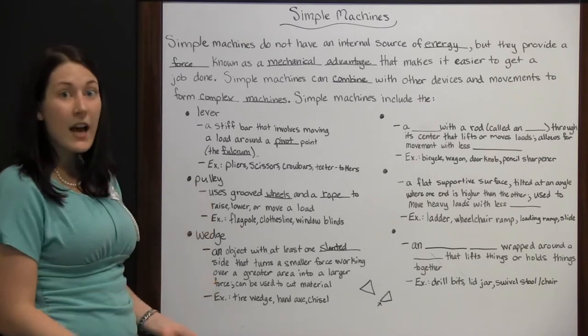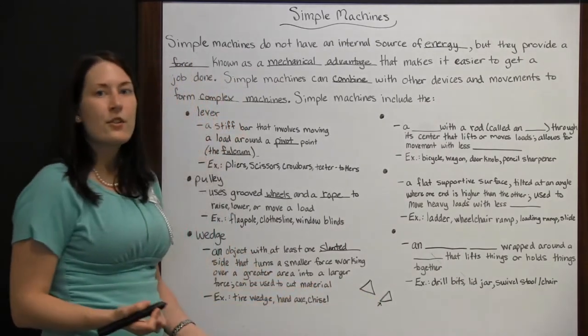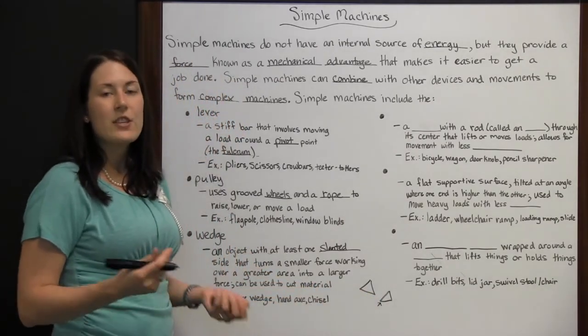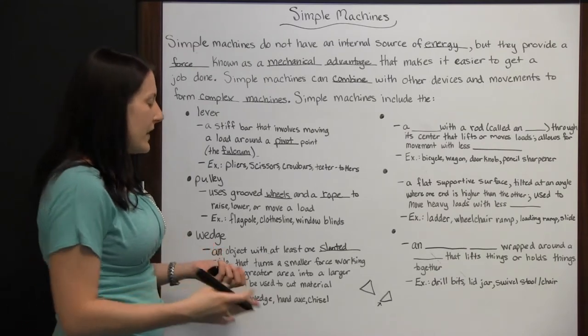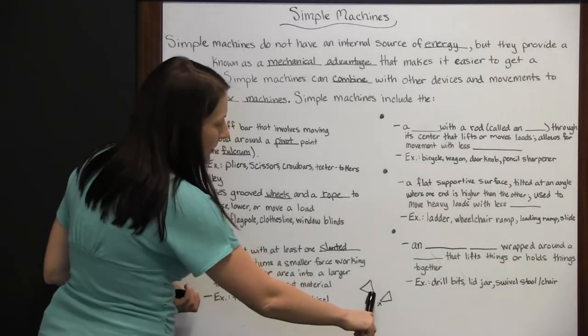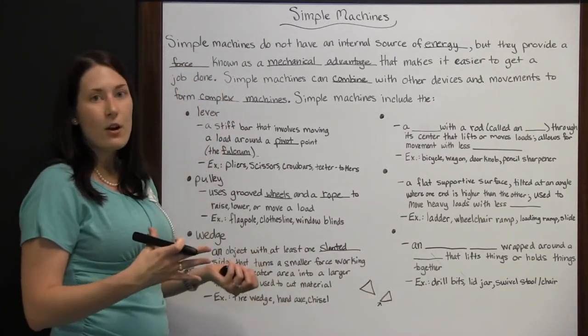Some examples are tire wedge. People will wedge a tire wedge under their back tires or front tires to keep it from rolling a certain direction. If the tire starts to move, it kind of pushes back and keeps the car from rolling.